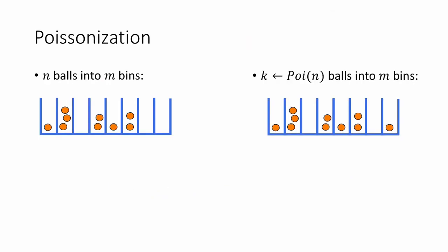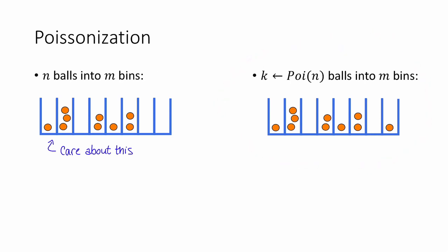This result gives us a clean way to analyze balls and bins problems called Poissonization. Suppose we care about the balls and bins problem where we drop n balls into m bins. What we'll actually analyze is the Poissonized version, where instead we drop k balls into m bins, with k a Poisson random variable with parameter n. The analysis is slightly easier because all bin occupancies are independent. Finally, we'll de-Poissonize to draw conclusions about the original problem — this usually follows since k is really tightly concentrated about n.